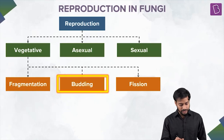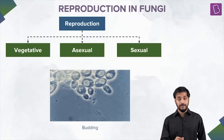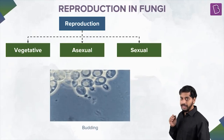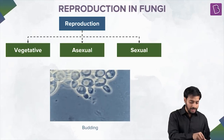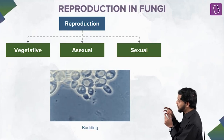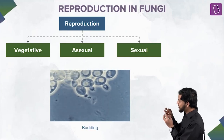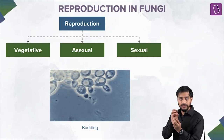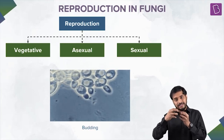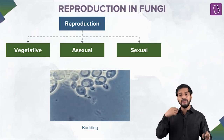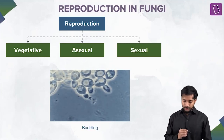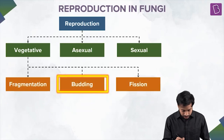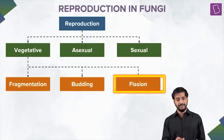Next is budding, which we've talked about previously. See this — follow one particular cell and you'll understand. One cell has a small outgrowth growing, known as a bud. These buds keep growing and eventually detach to become an independent organism. This is budding.